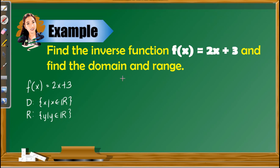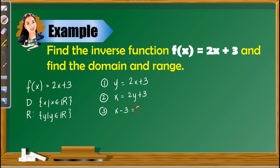Next, we need to find the inverse of f(x) = 2x + 3, applying the four steps from the previous video. Step 1: replace f(x) with y, giving y = 2x + 3. Step 2: interchange x and y, giving x = 2y + 3. Step 3: solve for y — isolate 2y by subtracting 3, giving x − 3 = 2y, then divide both sides by 2. Step 4: write the final answer as f inverse, so f⁻¹(x) = (x − 3)/2.